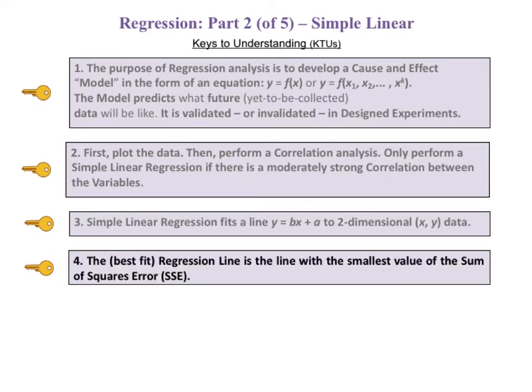The fourth key says the best fit regression line is the line with the smallest value of the sum of squares error, SSE.